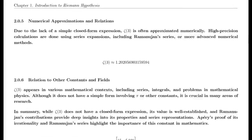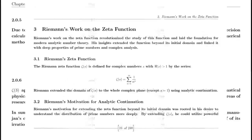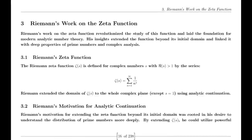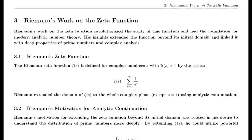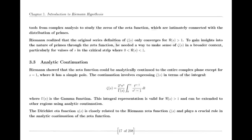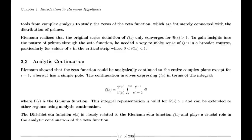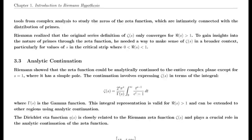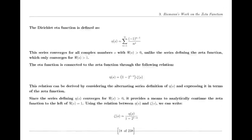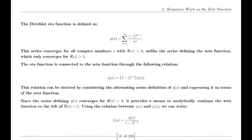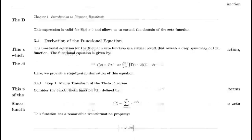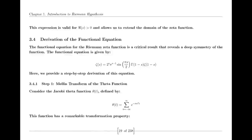Finally, we address the Riemann hypothesis itself. Riemann proposed that all non-trivial zeros of the zeta function lie on the critical line where the real part of s is one-half. This hypothesis has profound implications for number theory, particularly in understanding the distribution of prime numbers. Despite extensive numerical evidence supporting the hypothesis, a formal proof or disproof remains one of the greatest challenges in mathematics.